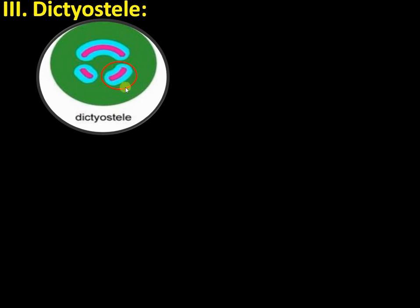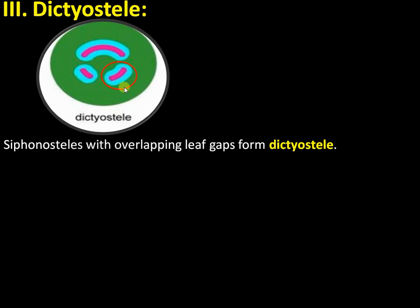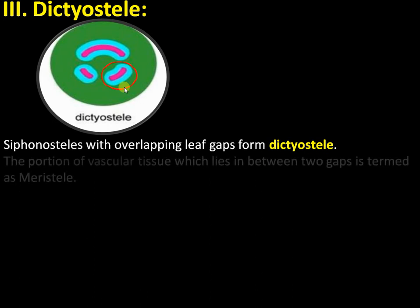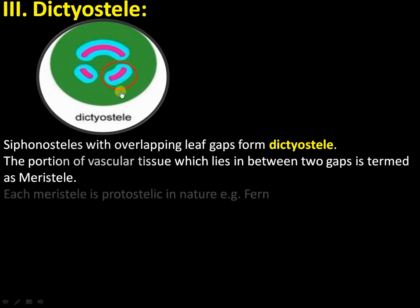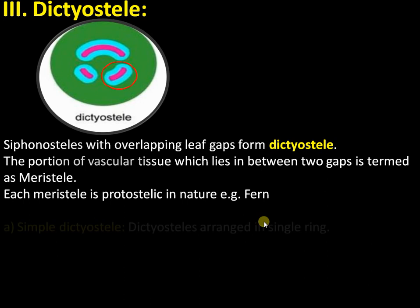Each small fragment is called a meristele. The meristele is protosteelic — there is a central xylem surrounded by phloem. The dictyostele is a siphonostele with overlapping leaf gaps. The portion of the vasculature lying between two leaf gaps forms each meristele. The meristele is protosteelic and is seen in Pteridium.